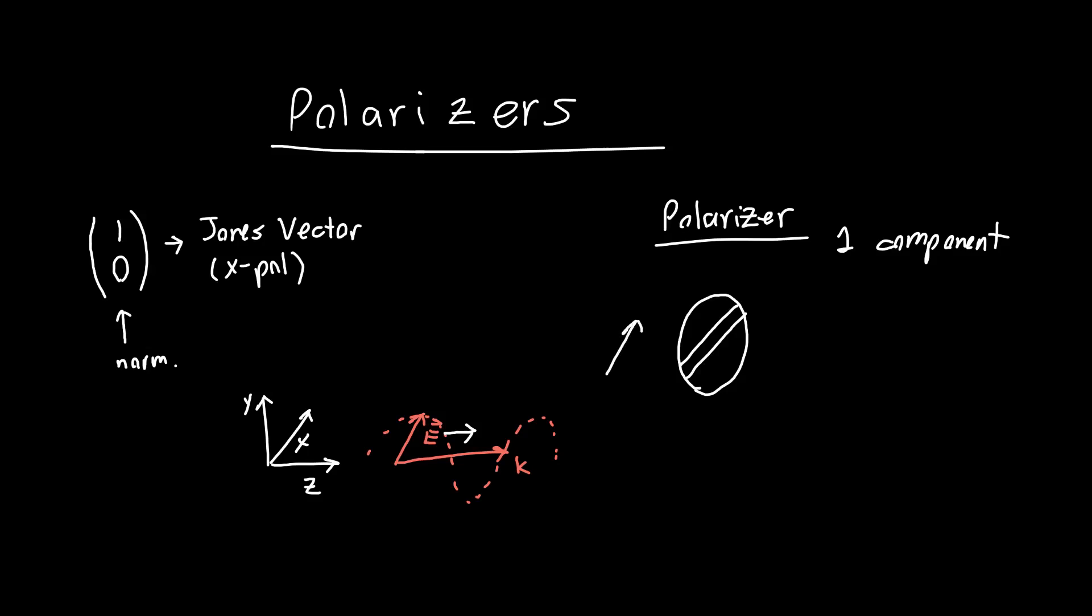If you send in x polarized light, an electric field in the x direction, it'll just go right through. But if you send in y polarized light instead, an electric field polarized in the y direction, it will get completely removed by the polarizer. There will be nothing at the output.